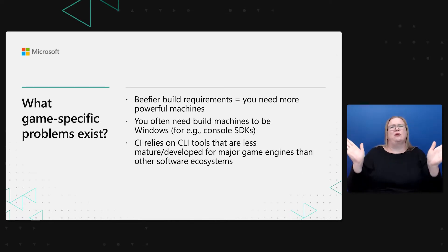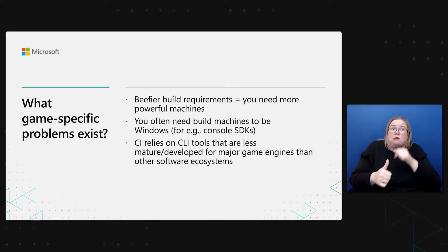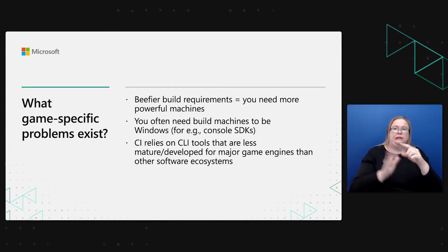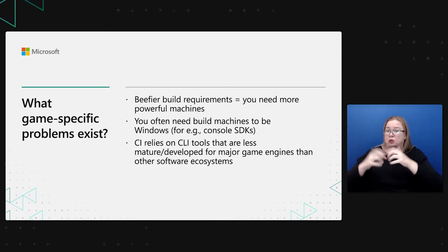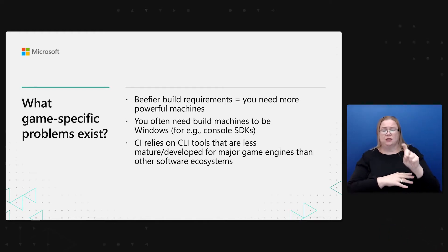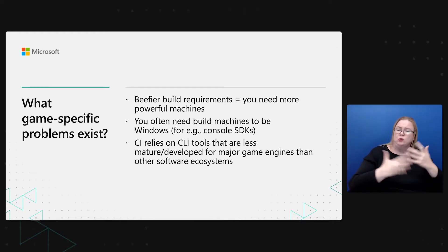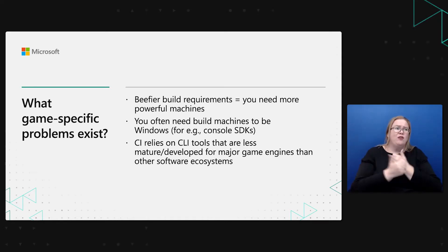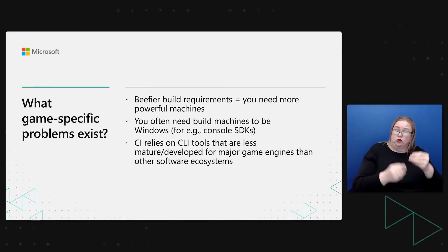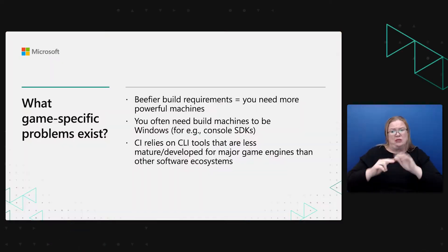But this is all generic CI stuff — none of it is really about games. What makes this hard for games? For one thing, we are not just building Java apps or web apps. We are compiling complex 3D simulations that need more powerful computers, so your build machines need to be more powerful. A lot of the tooling tends to optimize for Linux, but if you're building for a console, you may need to run on Windows, which can add complexity. And everything tends to rely on command line tools, which is great for software ecosystems that lean on them — but a lot of game engines don't play nicely with that.